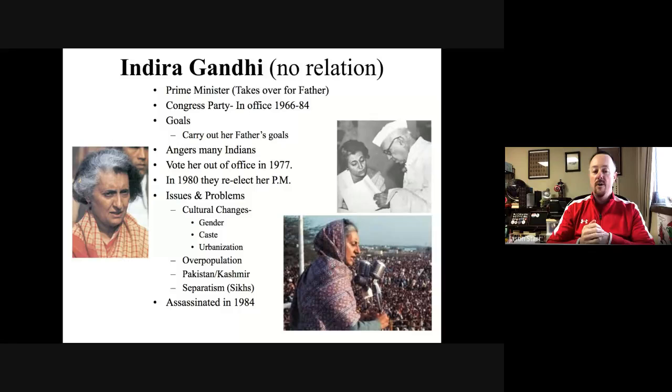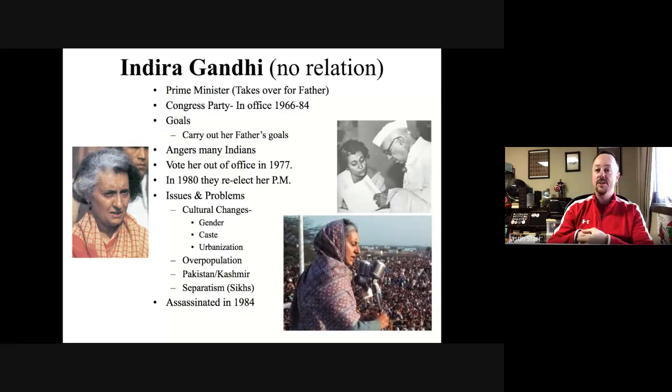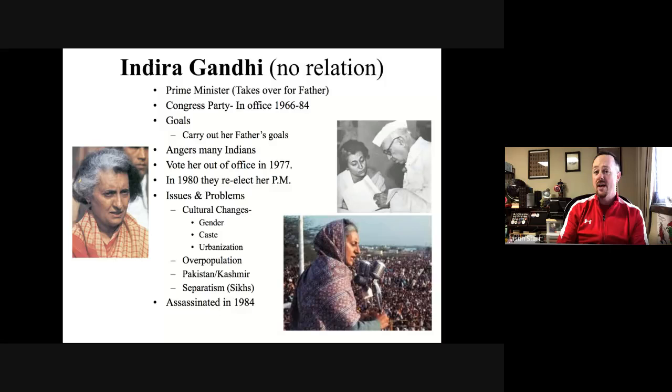Eventually Indira Gandhi took over a couple of years after her father Nehru's death — she is not related to Mahatma Gandhi at all. She was also a member of the Congress Party and was in office from 1964 to 1984, though she was voted out during that period as well. Her goals were essentially to continue and carry out her father's goals of uniting India. Her being in power angered many Indians, and they voted her out of office in 1977.